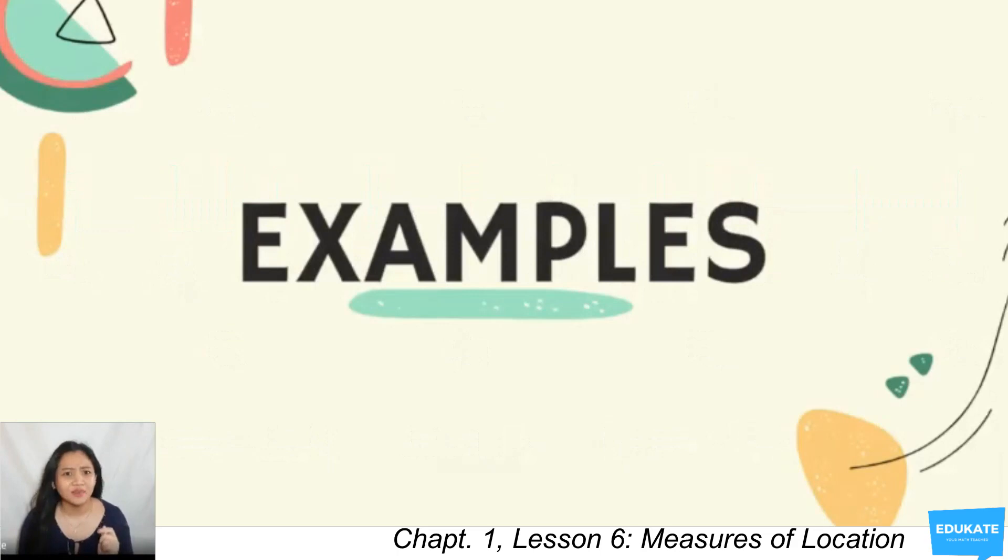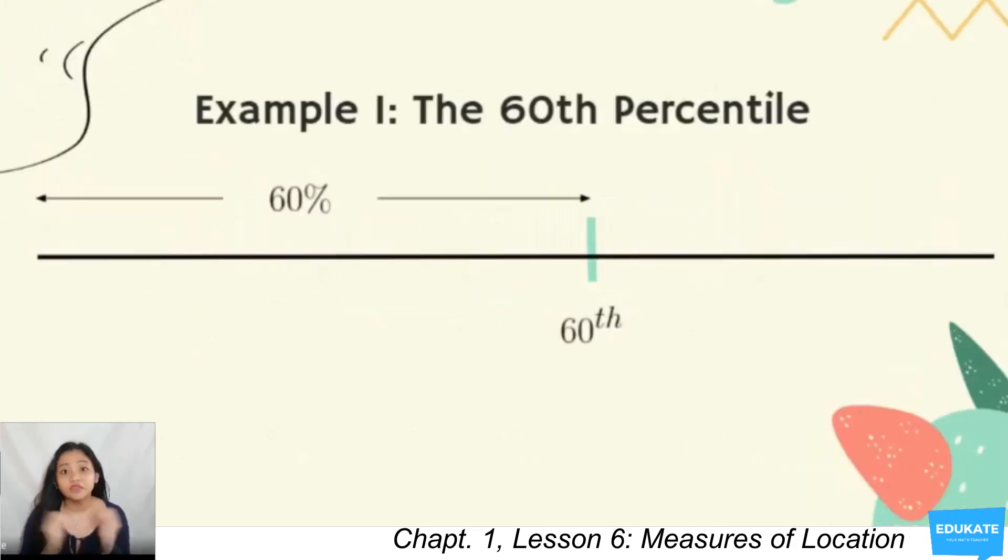Why don't we try some examples? Let's have the first example, the 60th percentile. Your 60th percentile includes the data point where 60% of the entire data is less than or equal to that data point. It also means that 40% of the data is greater than or equal to the same data point. That also applies with your decile and quartile.